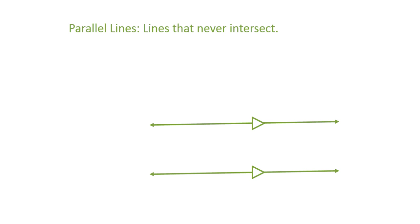Parallel lines are lines that never intersect. Pictured here, I have two parallel lines with triangles on them, which is the symbol to indicate that these two lines are parallel. Sometimes you might see arrows instead of triangles, but you need some sort of indication that these two lines are parallel. Either you need to be told or they have to have these symbols on them — you cannot just assume that they are parallel.